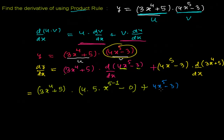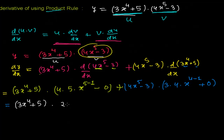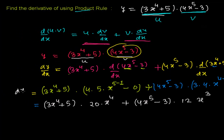Now for the second part: (4x to the power 5 minus 3) as it is, times the derivative of (3x to the power 4 plus 5). The coefficient 3 comes outside, and applying the power rule to x to the power 4 gives 4 times x to the power 3. The derivative of constant 5 is 0. So we get: (3x to the power 4 plus 5)(20x to the power 4) plus (4x to the power 5 minus 3)(12x to the power 3). This is dy/dx.